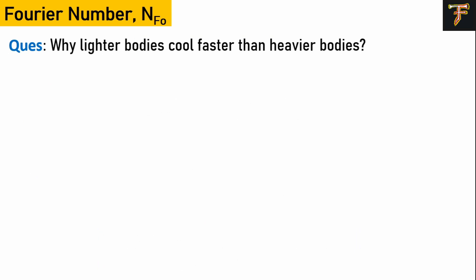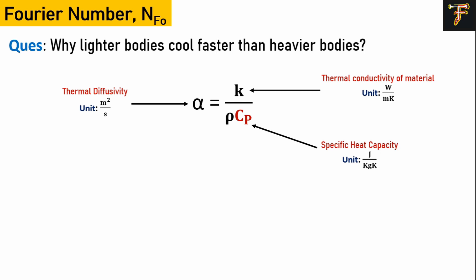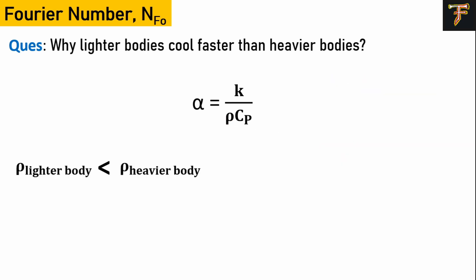You might have heard this question: why do lighter bodies cool faster than heavier bodies? We'll use thermal diffusivity as a tool to explain this. α = k/(ρCp), where α is thermal diffusivity, k is thermal conductivity, Cp is specific heat capacity in J/kg·K, and ρ is density in kg/m³. Lighter bodies have less density compared to heavier bodies, which means looking at the formula, α will be more for lighter bodies.